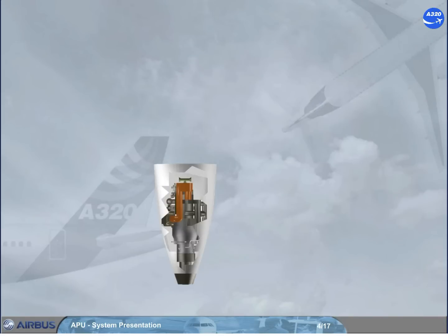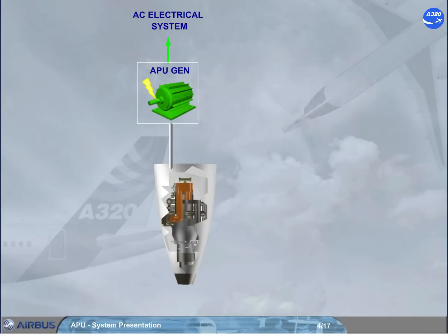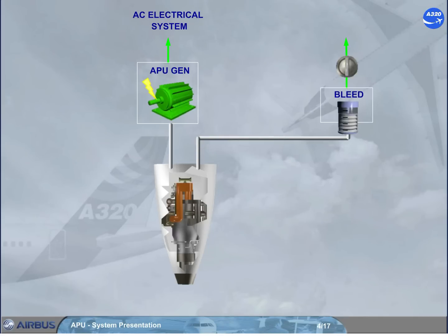The APU provides AC electrical power for the aircraft electrical system, and bleed air for engine start and/or air conditioning.